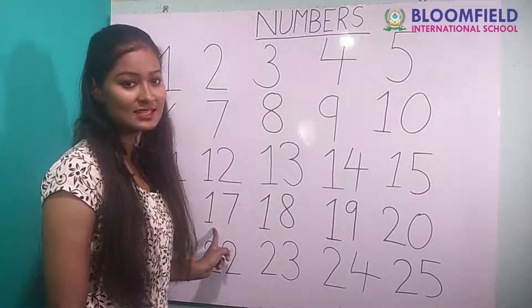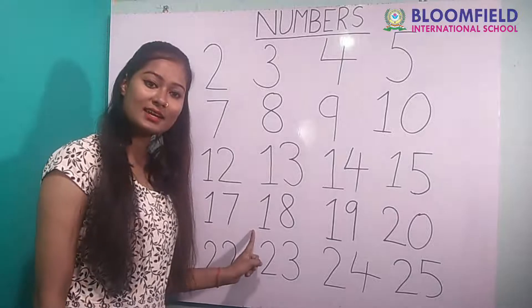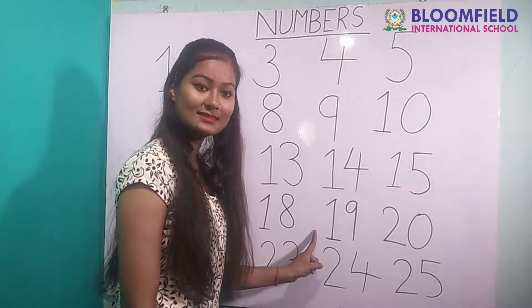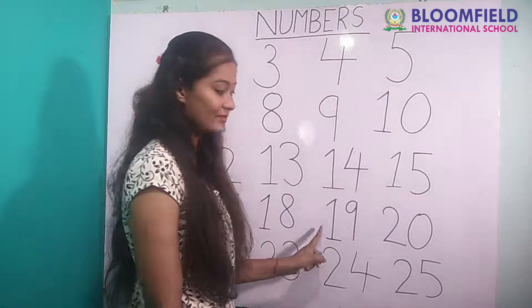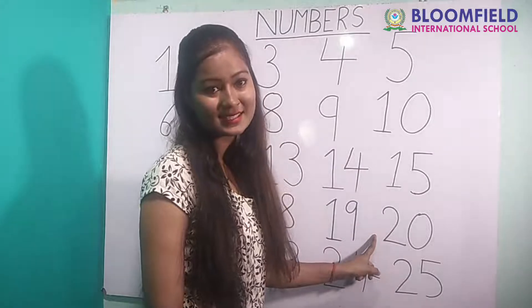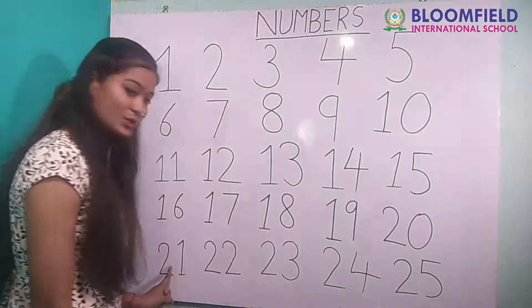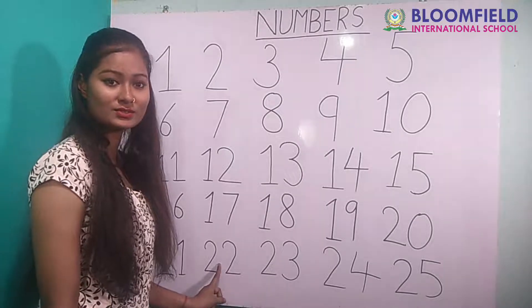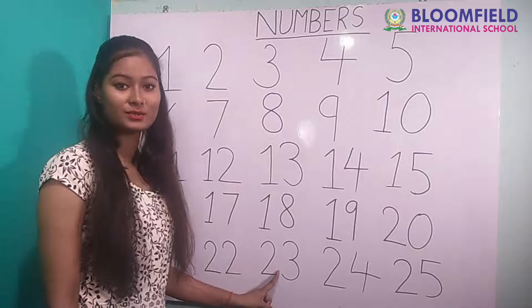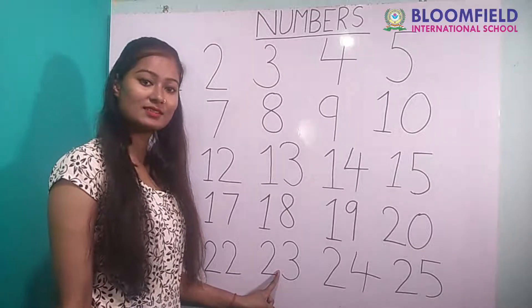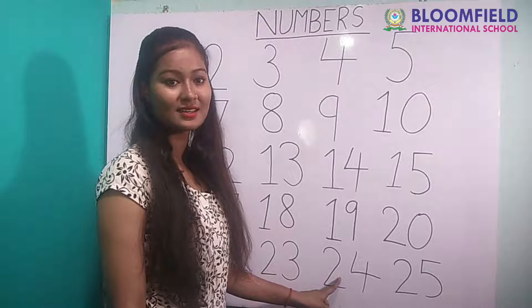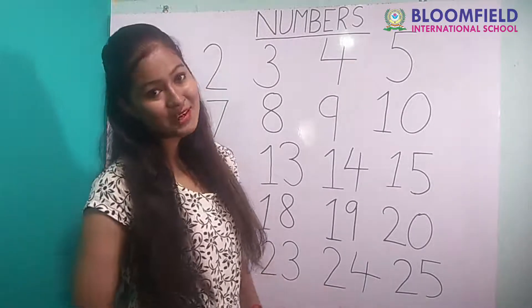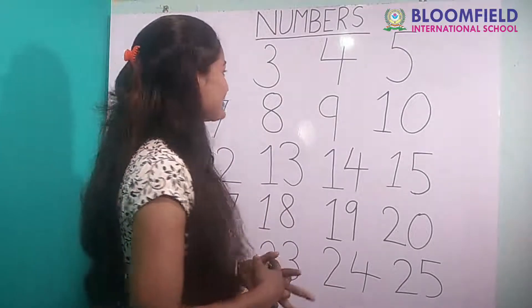Seventeen, eighteen, nineteen, twenty. Twenty one, twenty two, twenty three, twenty four, twenty five. Good. Very good.